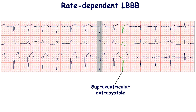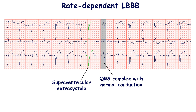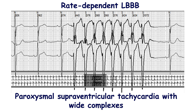Supraventricular extrasystole creating a compensatory pause gives time for the conductive tissue to exit from the refractory period, and such extrasystole terminates an episode of left bundle branch block. If the heart rate is still frequent, extrasystole can provide normal conduction of only one impulse that follows it. If such a patient has paroxysmal supraventricular tachycardia, a left bundle branch block pattern during it is observed.